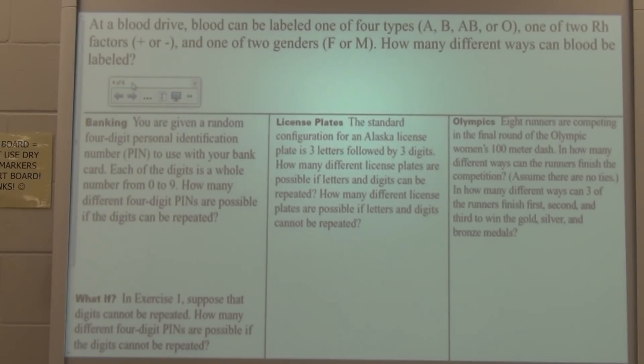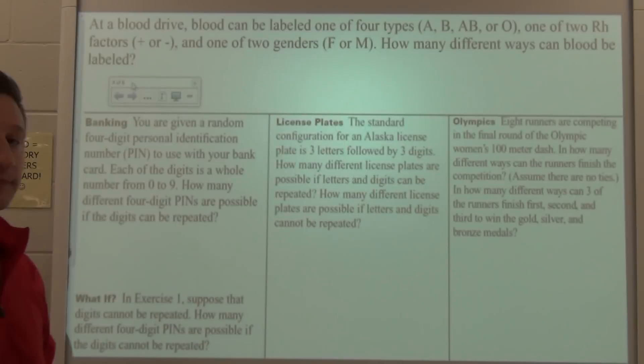At a blood drive, blood can be labeled one of four types (A, B, AB, or O), one of two RH factors (either positive or negative), and one of two genders (either female or male). How many different ways can blood be labeled?